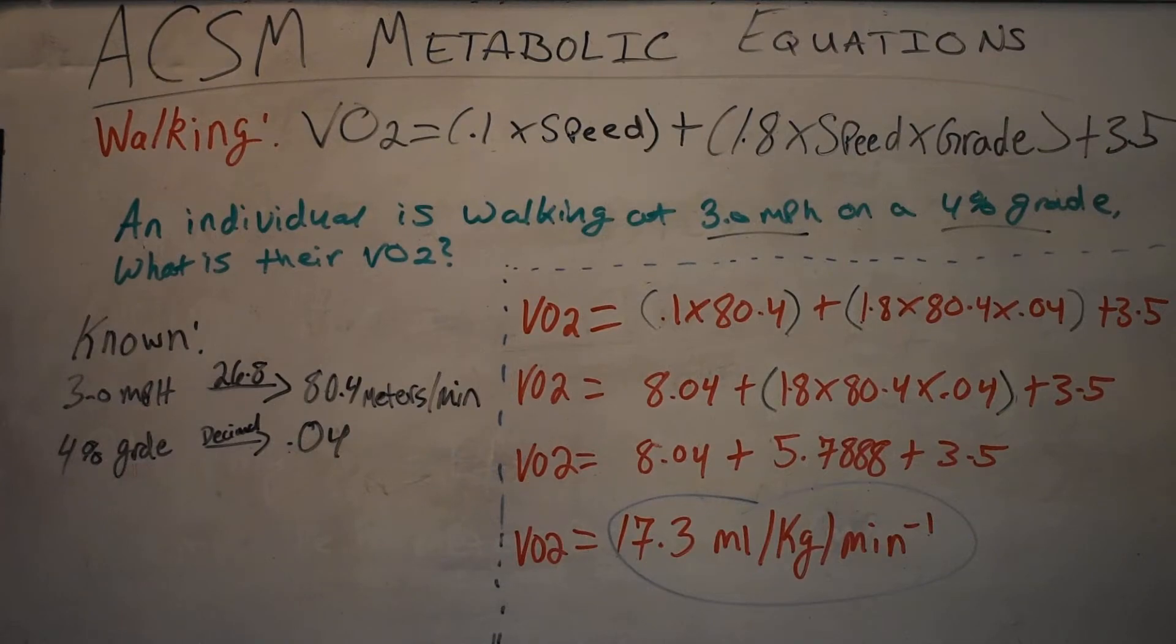To do that, you're always going to take whatever your miles per hour is and multiply it by 26.8. That's going to be your standard conversion. For students looking to take the ACSM exam, they will give you this equation, so you do not have to memorize this.